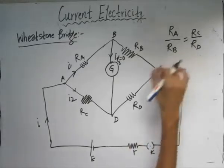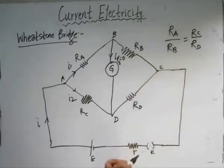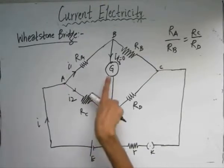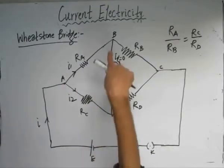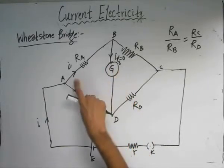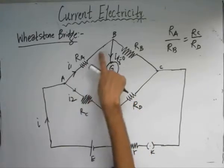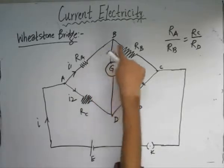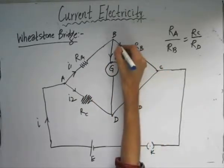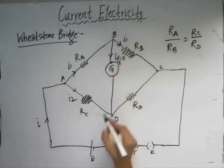If you want to prove this relationship, we can prove it simply by using Kirchhoff's voltage law and Kirchhoff's current law. Now, if there is no deflection in this galvanometer, that means Ig is zero. So the entire amount of current I1, which is flowing through AB, will pass to the branch BC. So in this branch we will be having the same current I1.